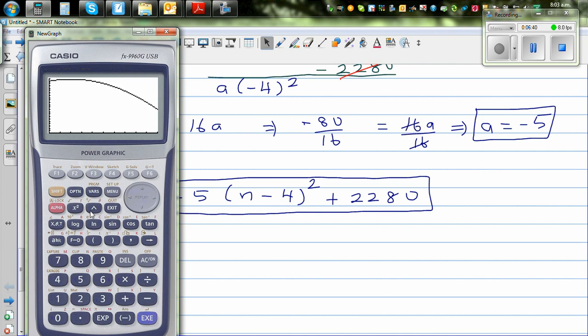So your G-SOLV and maximum. Fourth month you get the maximum.